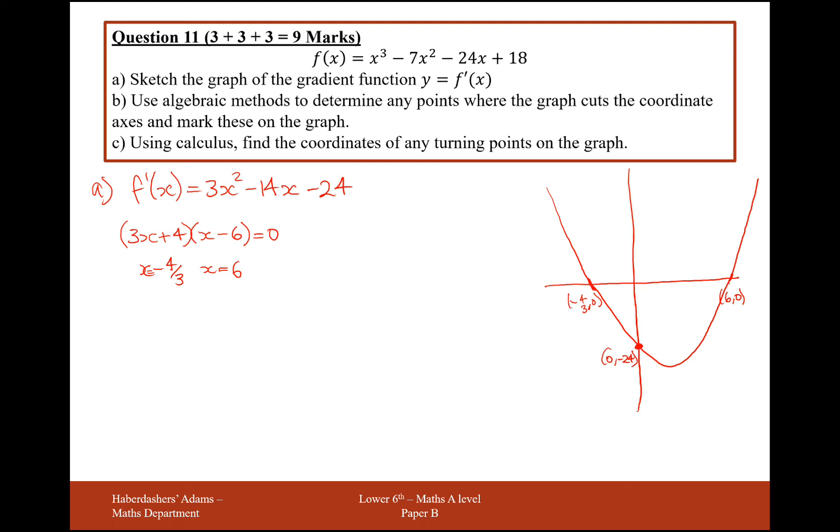Part C, use calculus to find the value of any turning points. So we have a turning point down here. And the way that we find turning points is we differentiate and we set that equal to 0. So for part C, we're going to do f dash dash if we're sketching this differential graph. So that's going to give us 6x minus 14 equals 0.